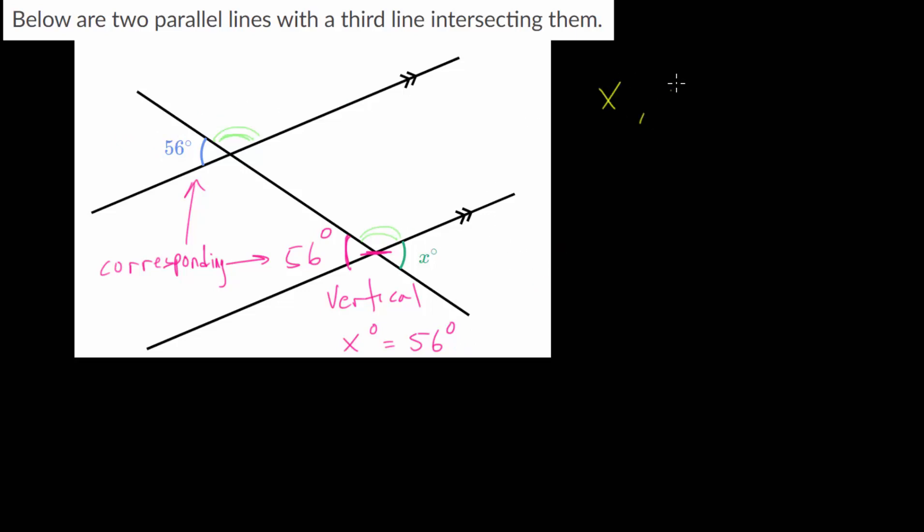So, x and 56 degrees, like I said, we call these alternate exterior angles. And we say alternate because they are on alternate sides of this transversal. And they are exterior because they are on the outsides of these parallel lines.